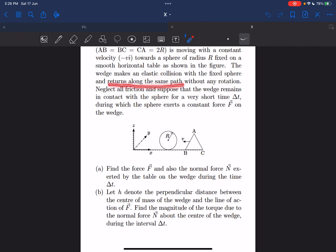The wedge makes an elastic collision with the fixed sphere and returns along the same path. So there is no toppling here or rotation involved in this question. We have to neglect all friction.